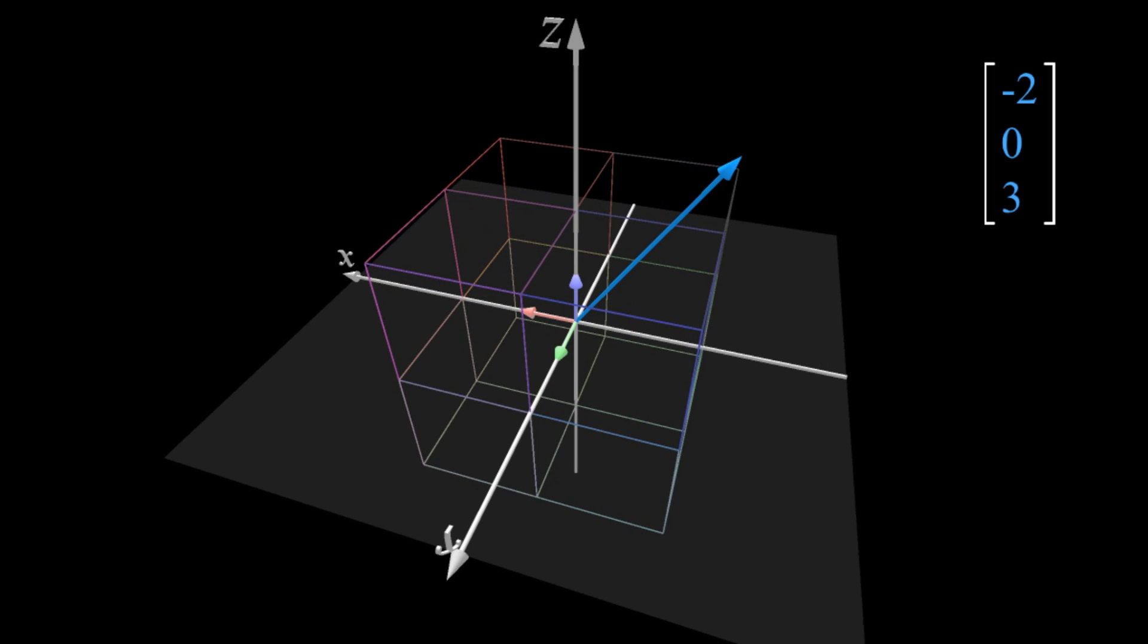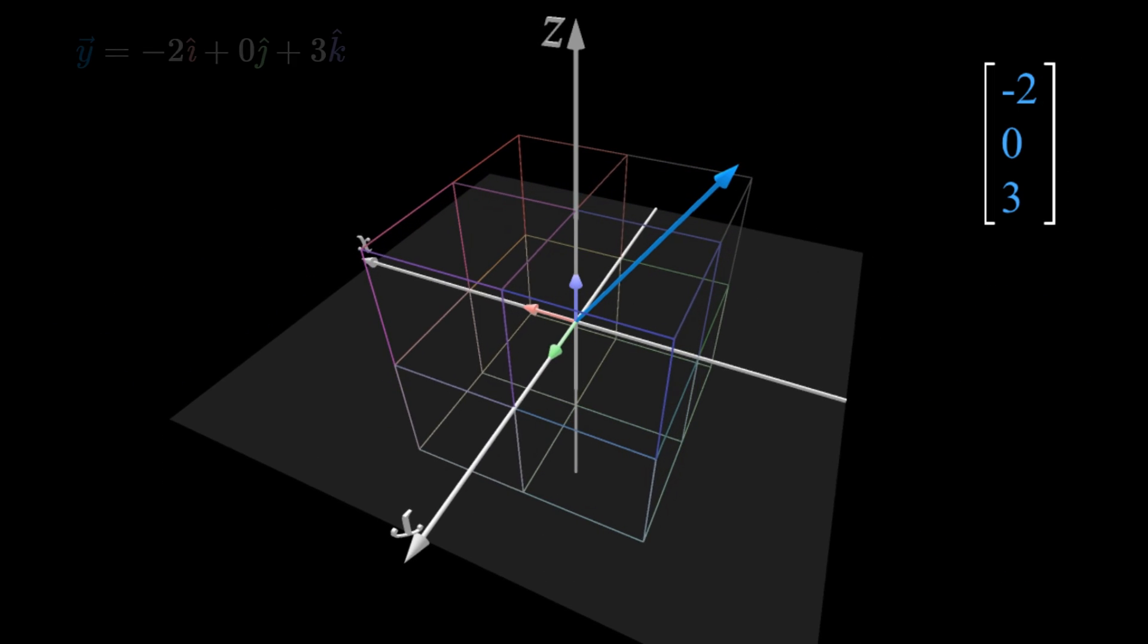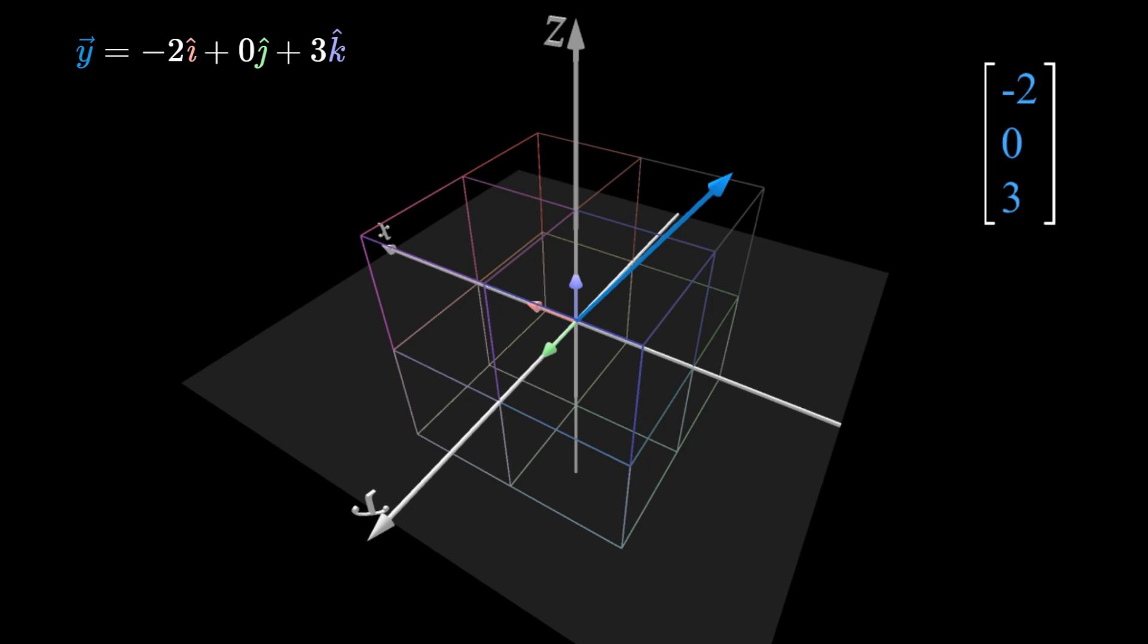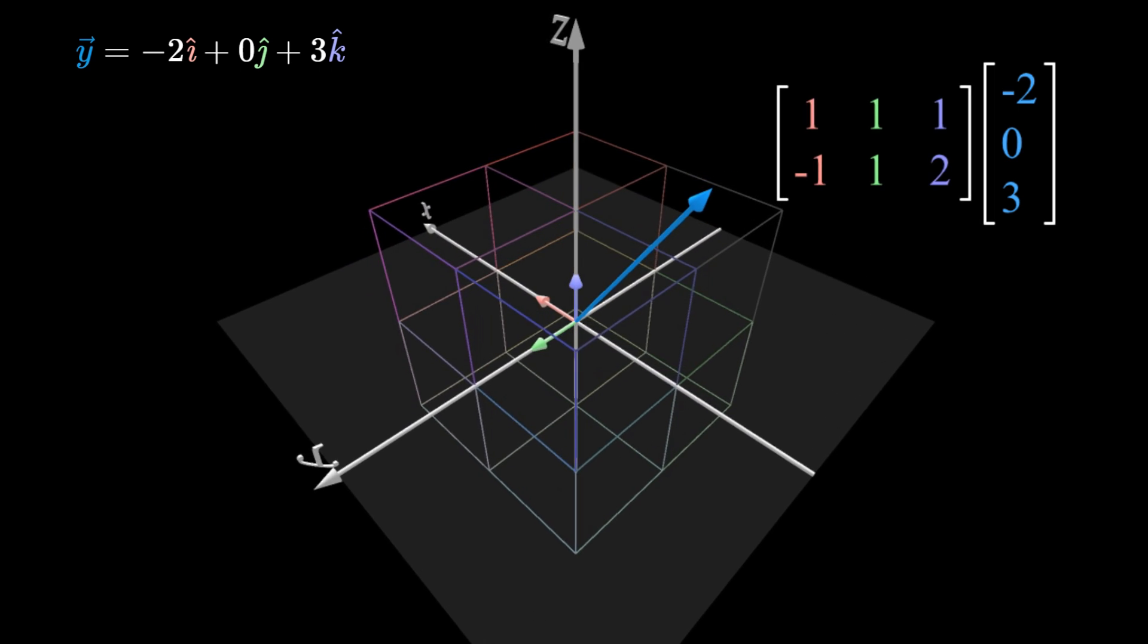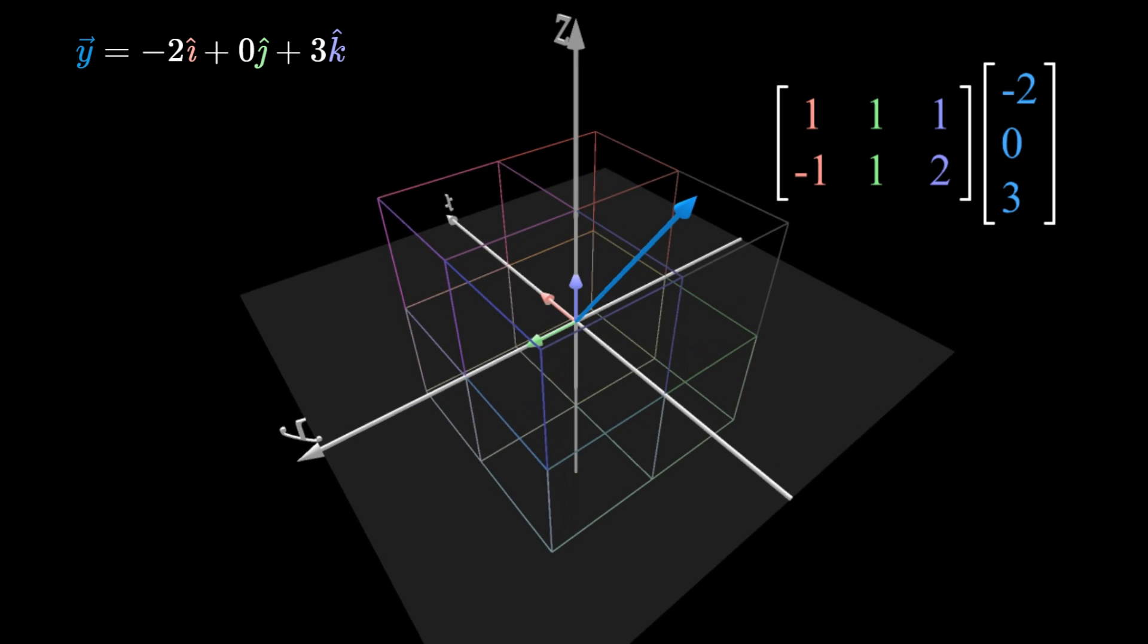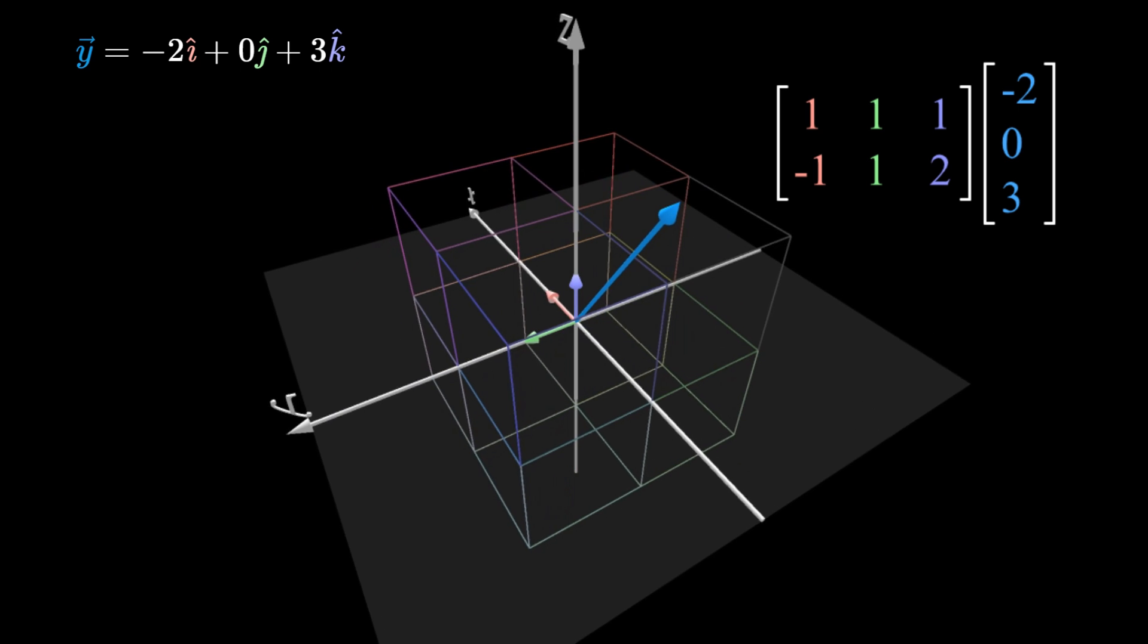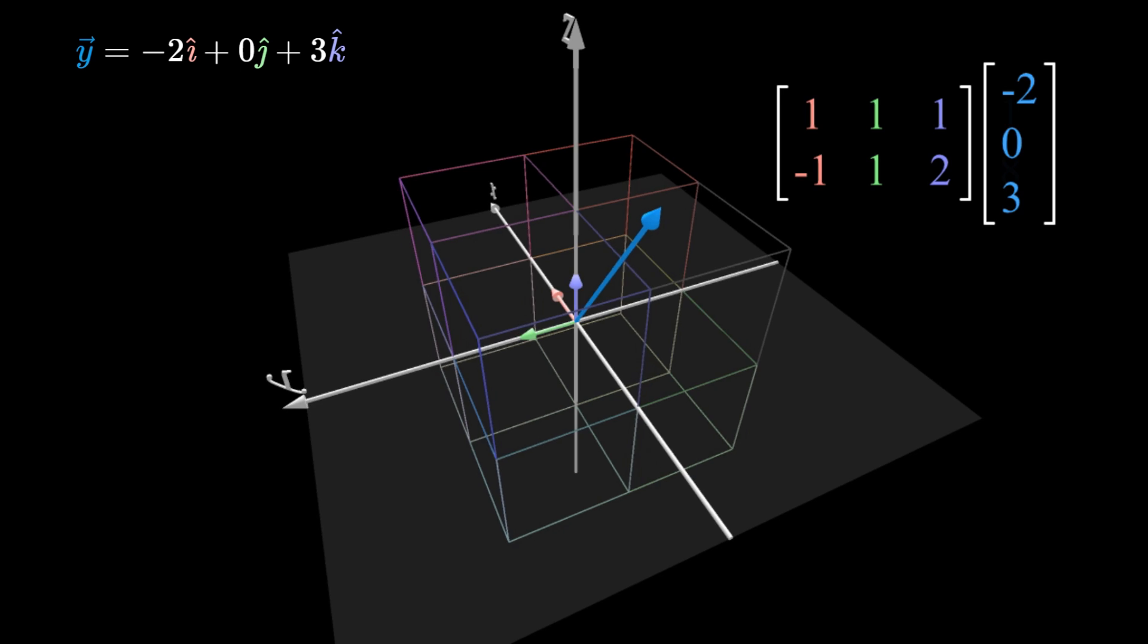Next, imagine the vector Y sitting in 3D space. This vector is a linear combination of the three basis vectors. If we apply the transformation X transpose to this vector, then since the transformation is linear,